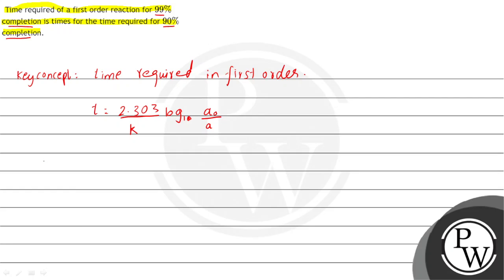So first, for 99% completion. 99% completion means that after time t, 1% of reactant is left, so we have time to get 1 by 100 times a₀.